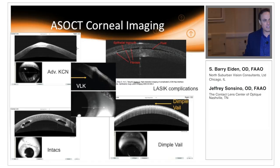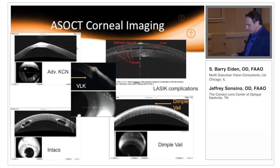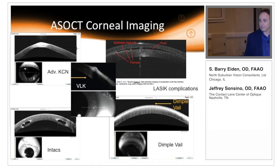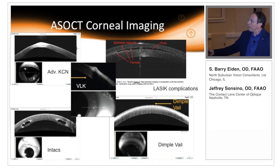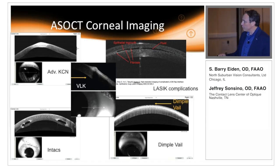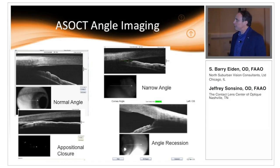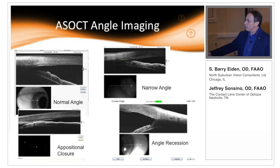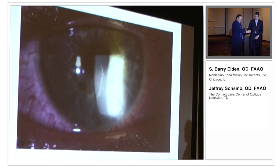We also use OCT for some amazing quality imaging. Here are a variety of different patient images — one I published where a patient had dimple veil and you can actually see the impressions in the epithelium. Images of Intacs are shown here as well. We also published a case in Review of Cornea and Contact Lens on management of VLK, with a phenomenal image of vascularized limbal keratitis with epithelial hypertrophy. Another area we use OCT for is angle assessment — narrow angle, recessed angle, appositional closure, and normal angle.